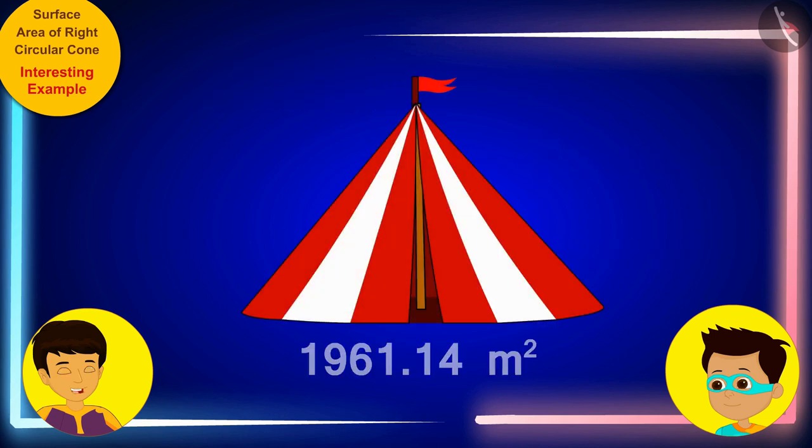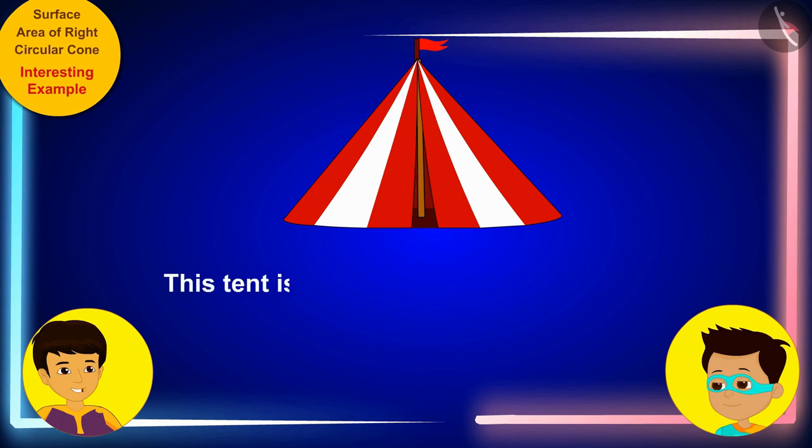I got it. The curved surface area of the tent is 1961.14 square meters. This means that this tent is built using 1961.14 square meters of cloth.